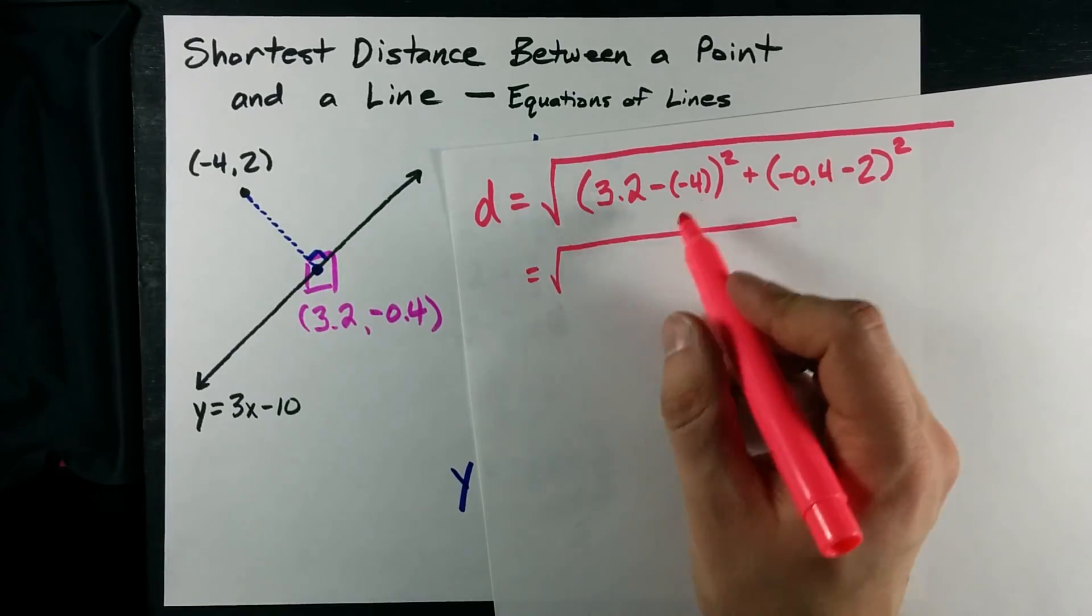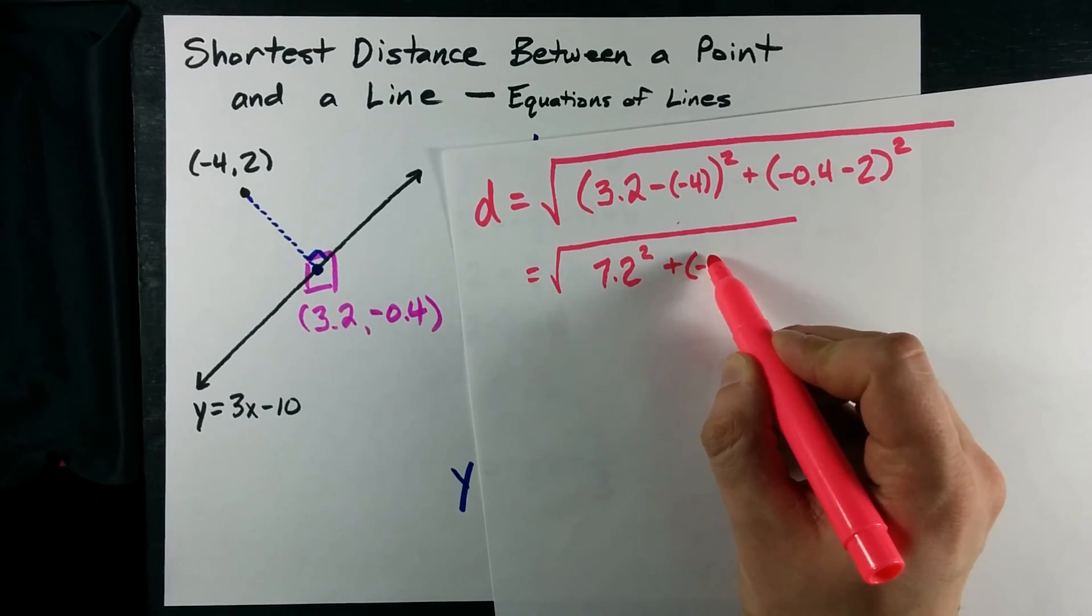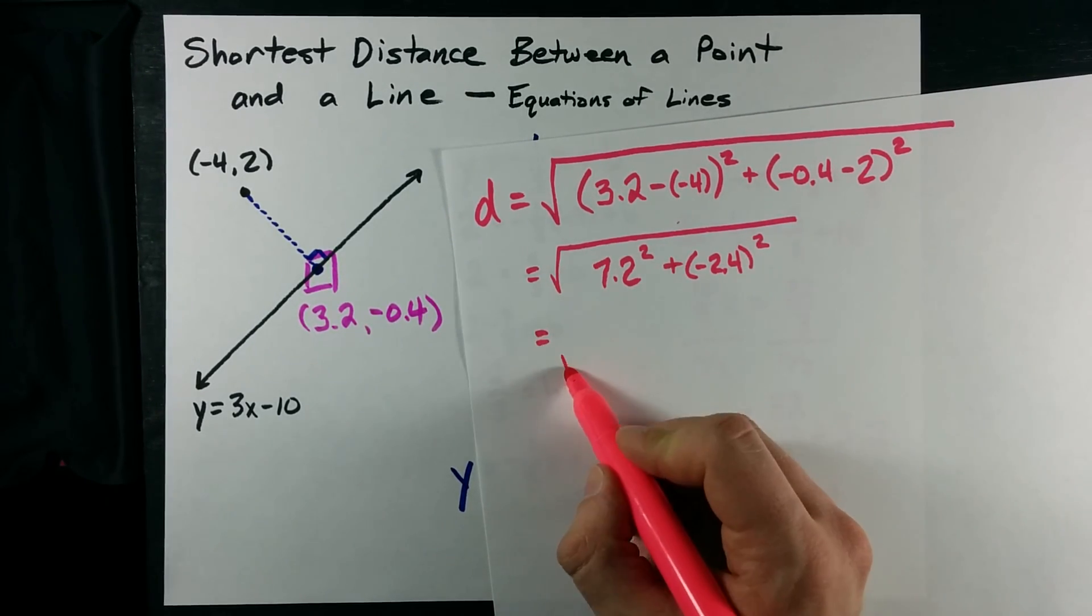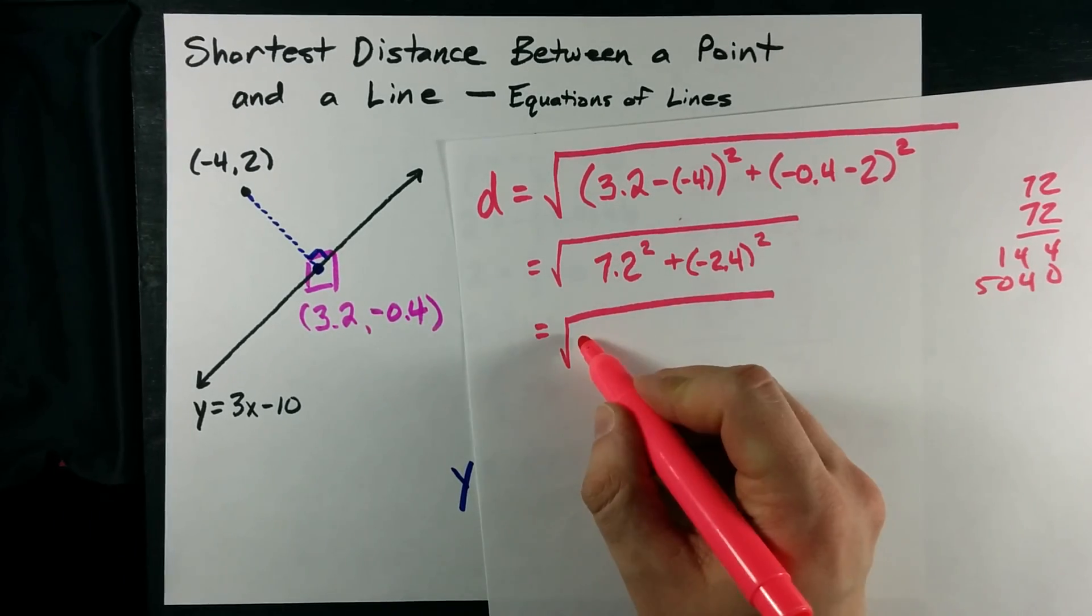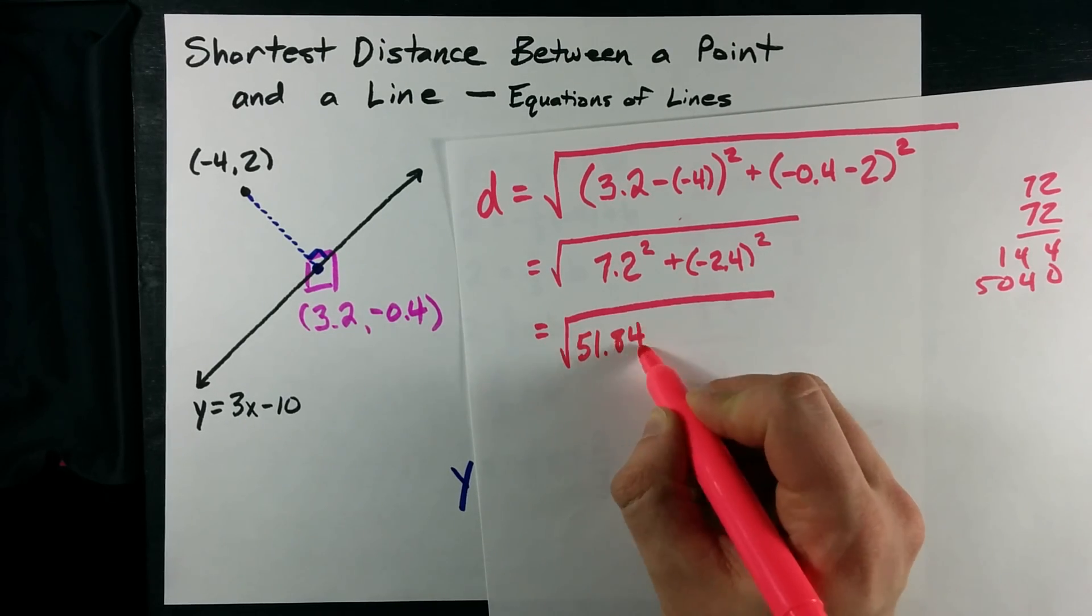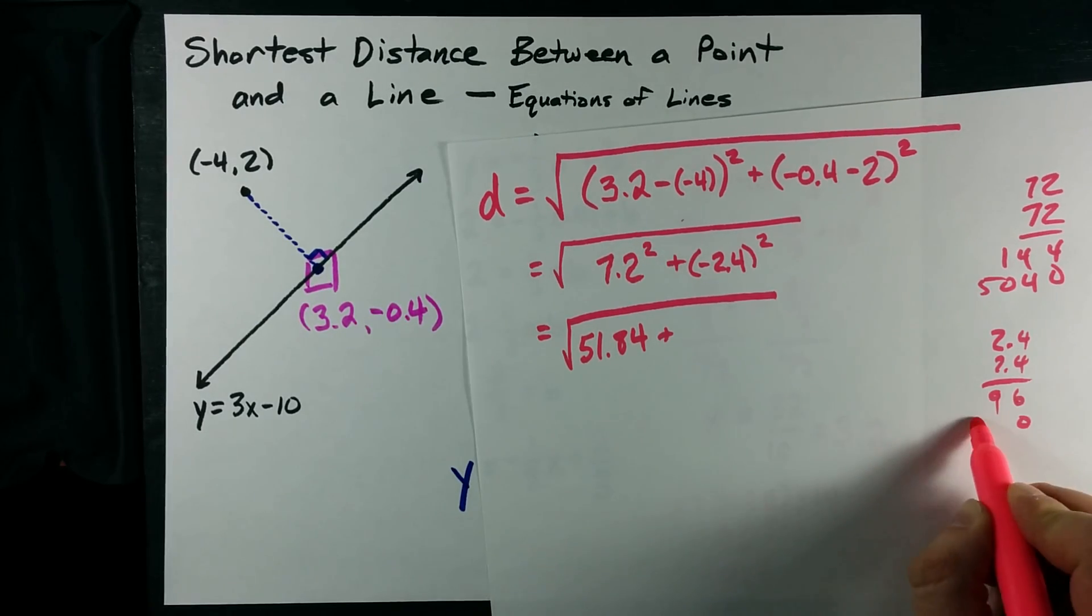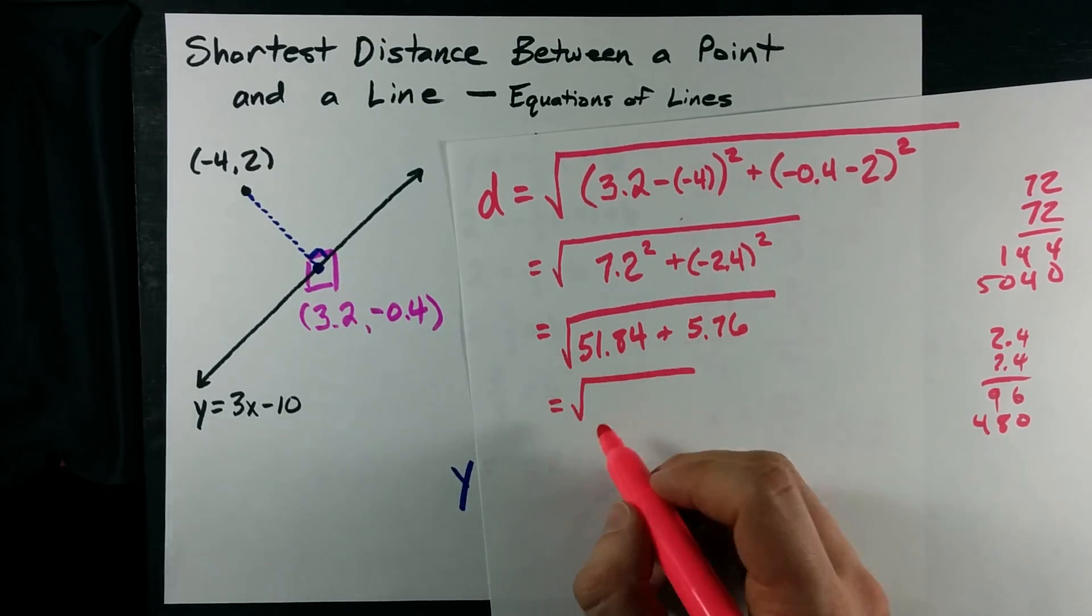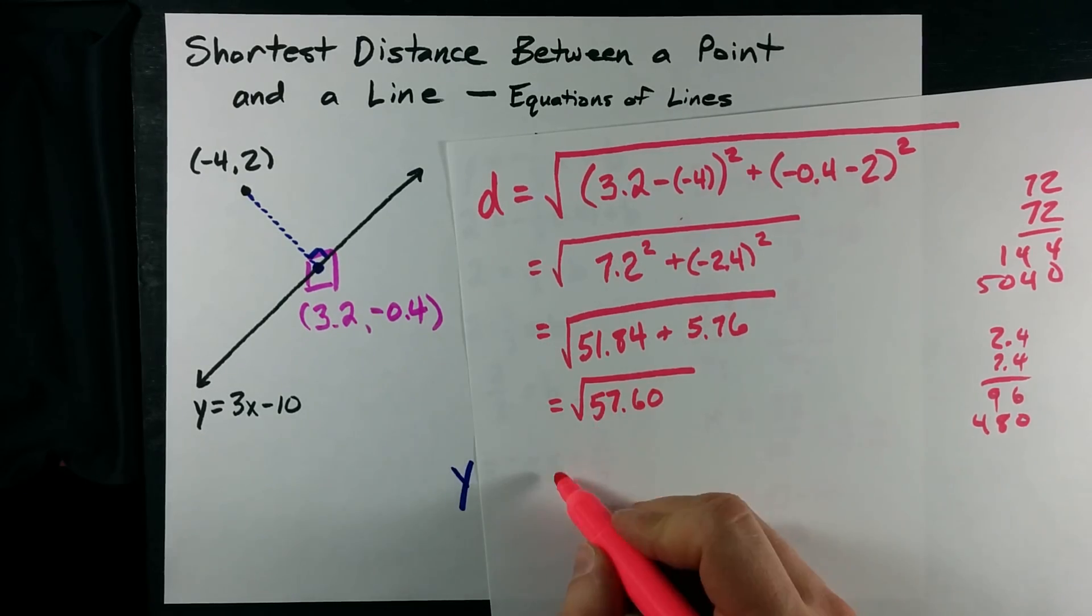This is just me doing work, right? Here I get 7.2 squared plus negative 2.4 all squared. I don't have my calculator with me. Where is my calculator? I don't really want to have to do this by hand. That's 51.84 plus whatever I get when I multiply these together is that 5.76.